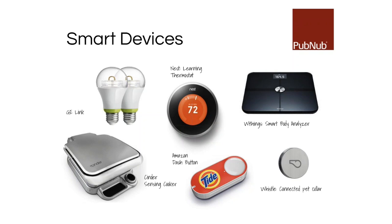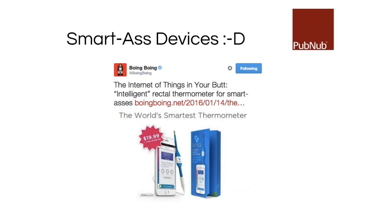Whistle is like a Fitbit for your dogs — it's kind of cool. I have a cat, but my cat doesn't go out so he doesn't need this. And recently I found something funny on Boing Boing: a smart rectal thermometer. So there are so many interesting products out there.